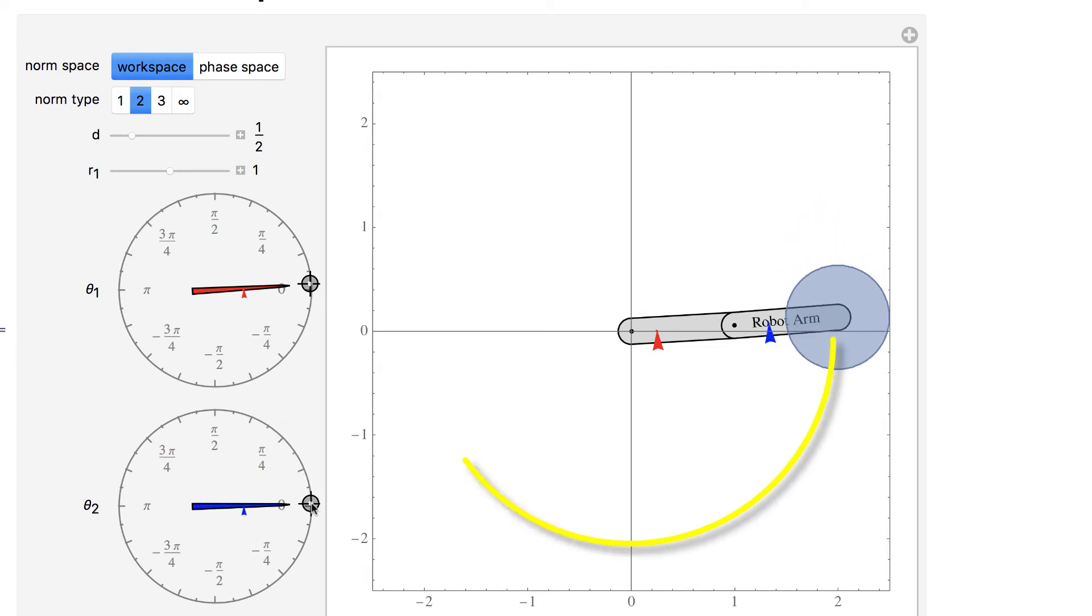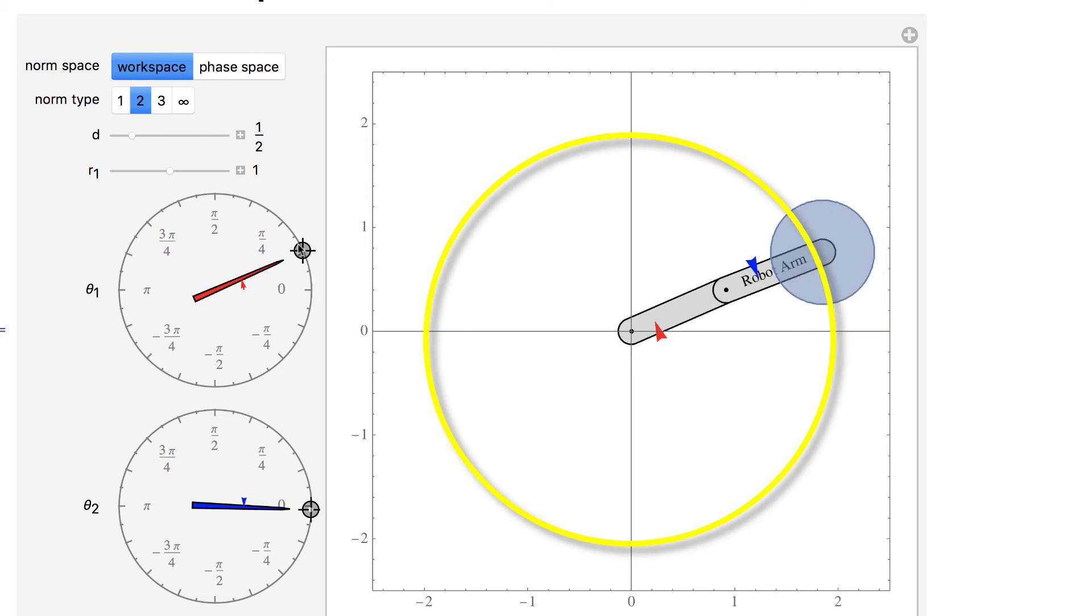The arm's workspace is a unit disk, but the workspace norm shown includes an area inaccessible to the robot arm. The arm can't extend any further, so in some sense, points out here are really infinitely far from the robot, while points inside the robot's reachable set are closer.